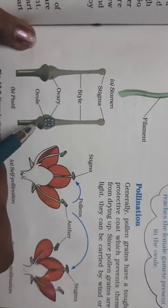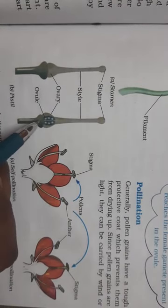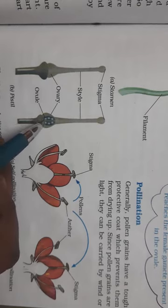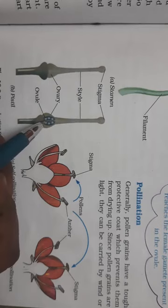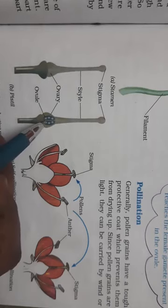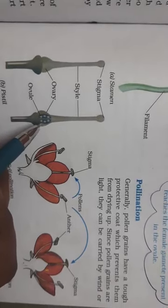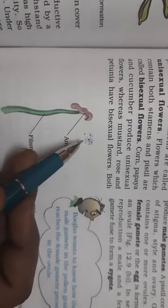The pollen grain produces the male gametes, and the ovary contains many ovules — it may be one or more ovules. The egg, or the female gamete, is formed inside the ovule. So the pollen grain produces the male gametes and the ovule contains the female gametes.